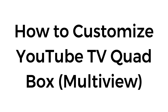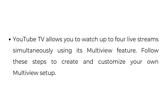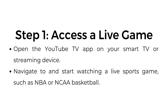How to customize YouTube TV Quad Box Multiview. YouTube TV allows you to watch up to four live streams simultaneously using its multiview feature. Follow these steps to create and customize your own multiview setup. Step number one: access a live game. Open the YouTube TV app on your smart TV or streaming device. Navigate to and start watching a live sports game such as NBA or NCAA basketball.